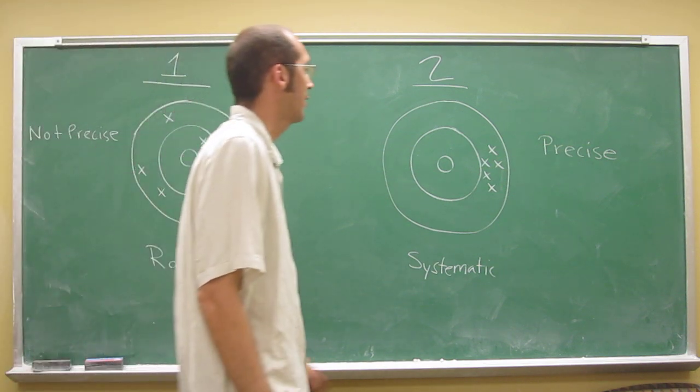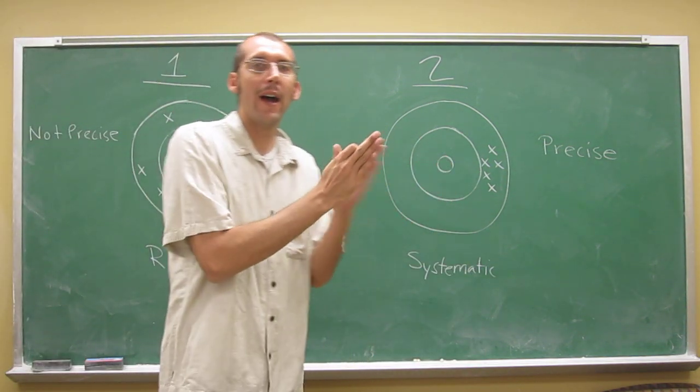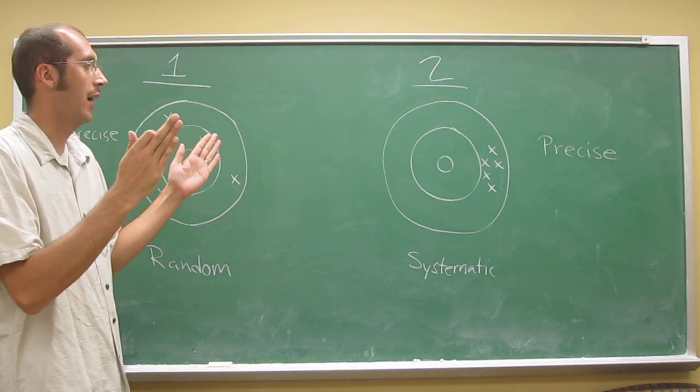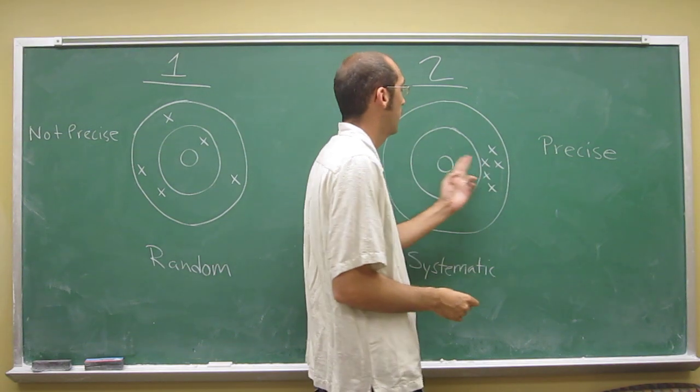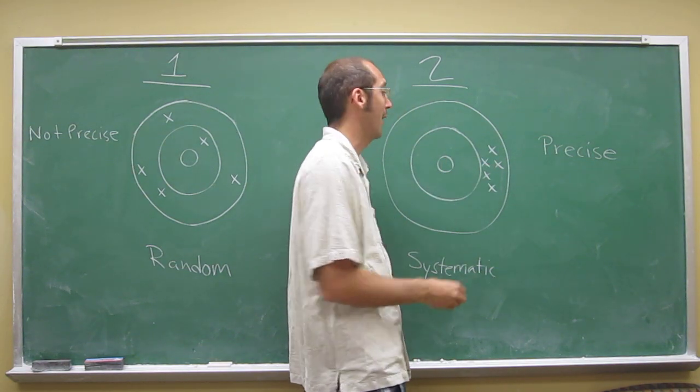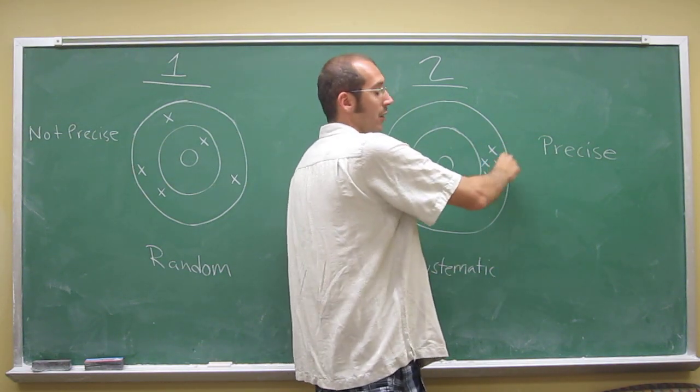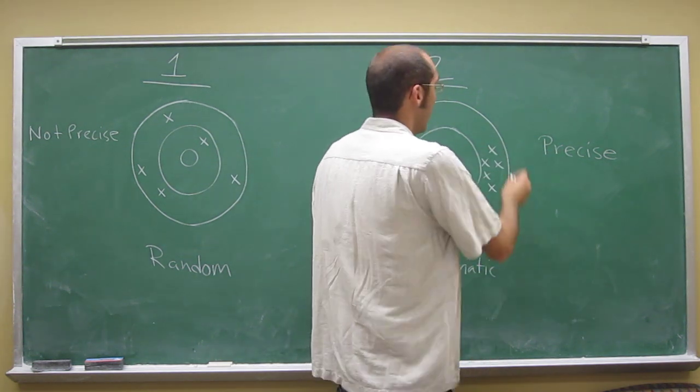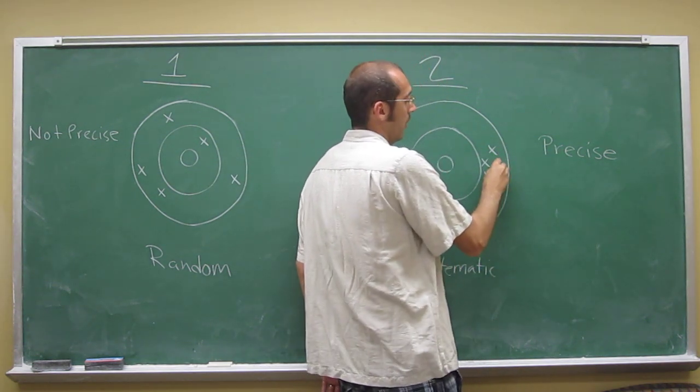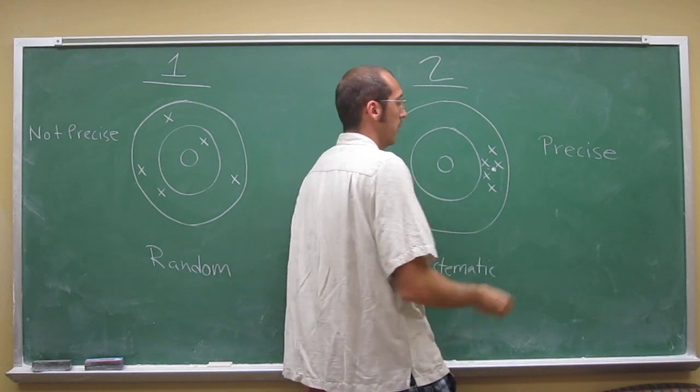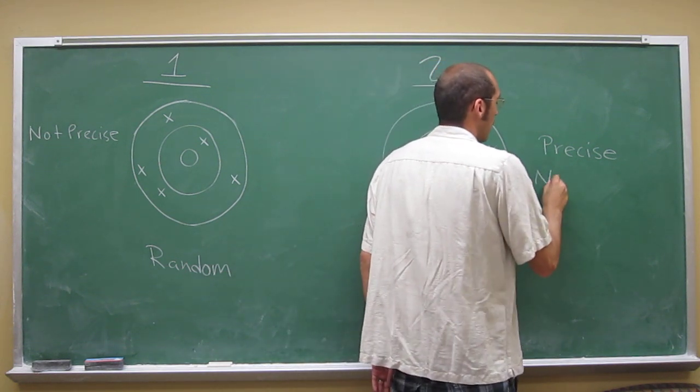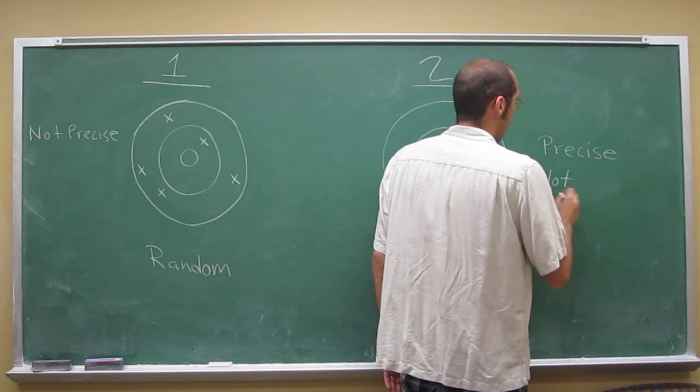Accuracy talks about how far away the values are from the correct values. So when we're talking about darts, this one is not very accurate because the average of these is going to be somewhere in the middle here, and that's pretty far away from the actual values. So this is not accurate.